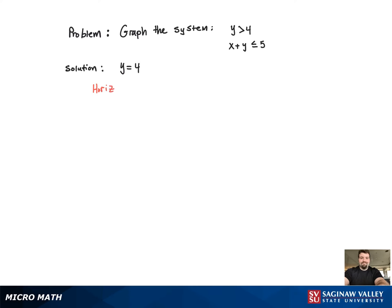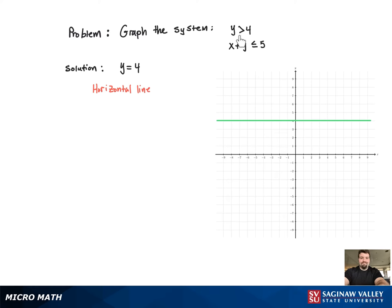To do that, we need to switch it to an equation and graph the line. So that's going to be y equals 4, a horizontal line. Since it's strictly greater than, that means it's going to be a dashed line.